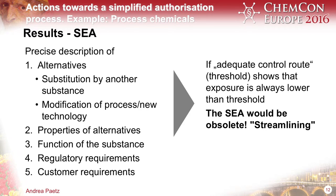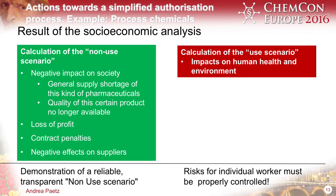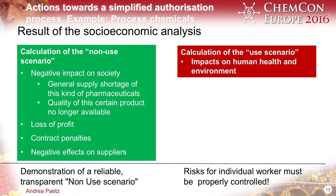If you have an adequate control route and you have a threshold, it should be enough that the exposure in your plant is always below the threshold — that was a finding of our pilot project. You have to look at the negative impact on society. That's often misunderstood — it is not the use or benefit for your own company; you always have to look for the benefit for society. In the pharmaceutical case, you have to consider what happens if the pharmaceutical is not available on the market. Loss of profit, contract penalties, negative effects on suppliers — but you have to compare these against what happens with your workers and your environment.